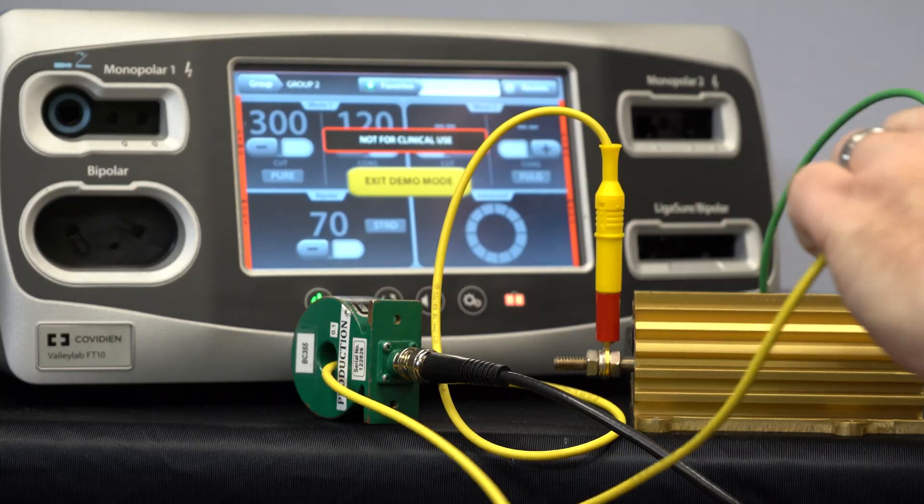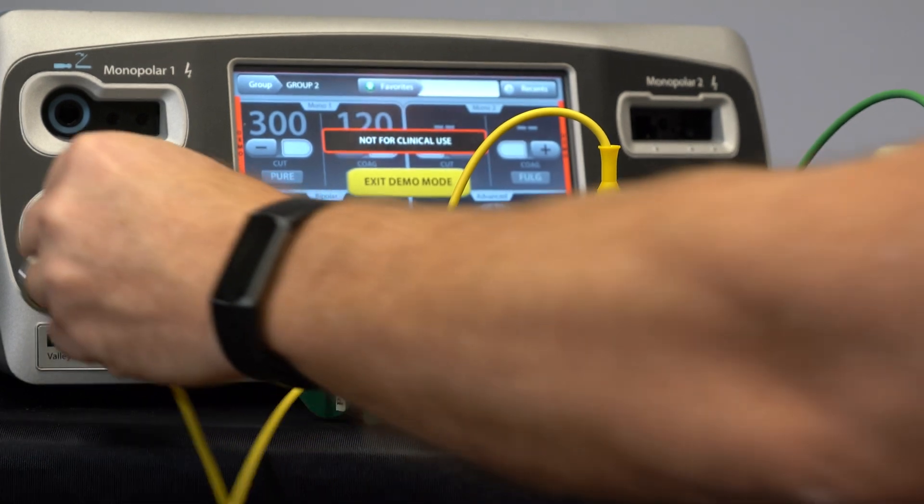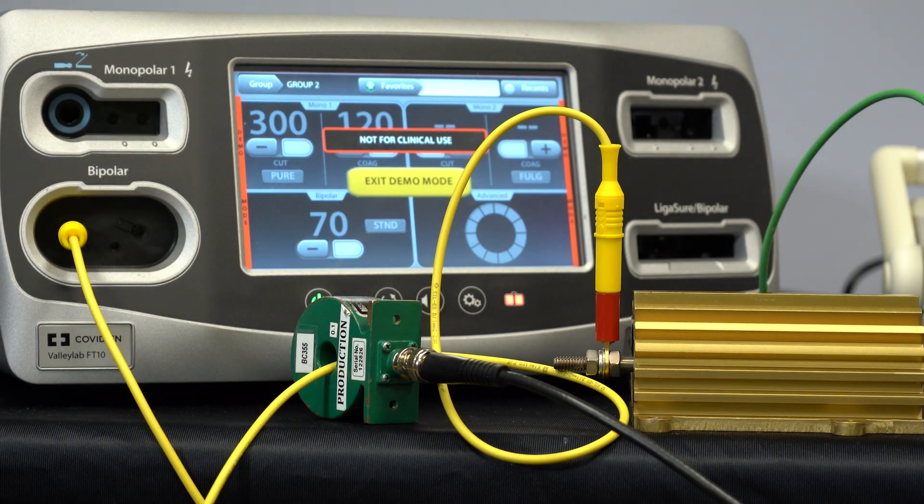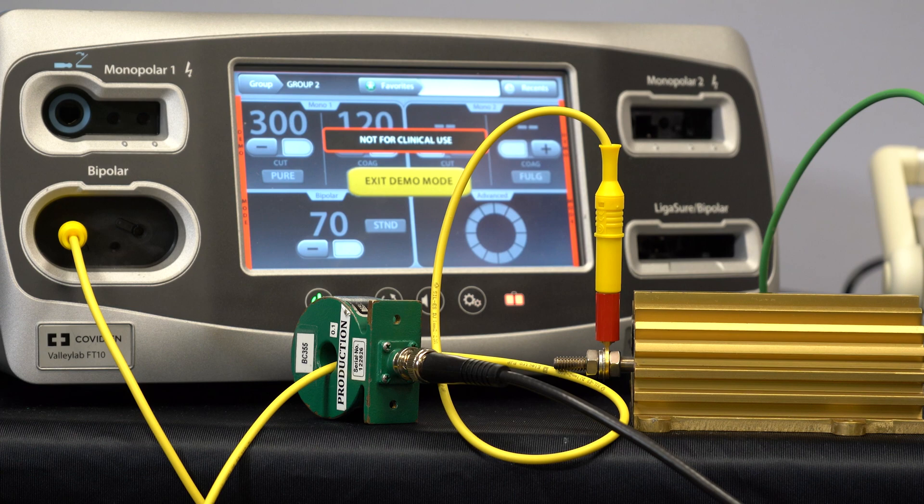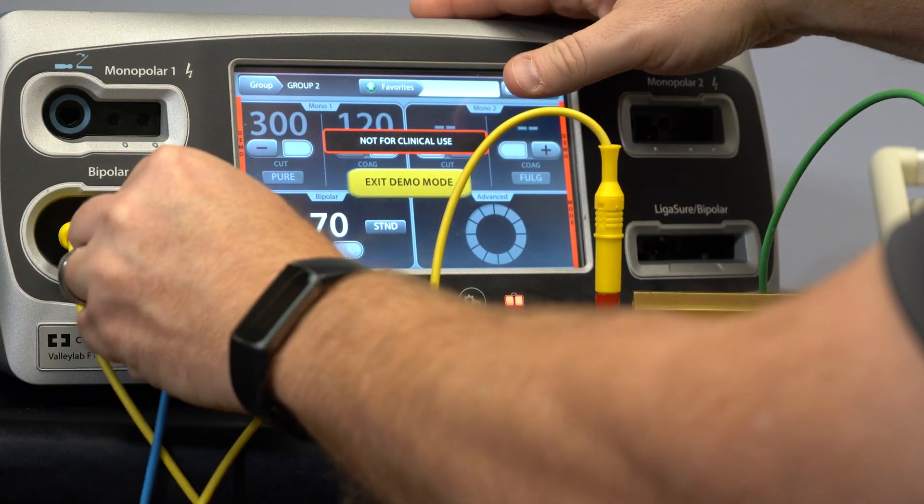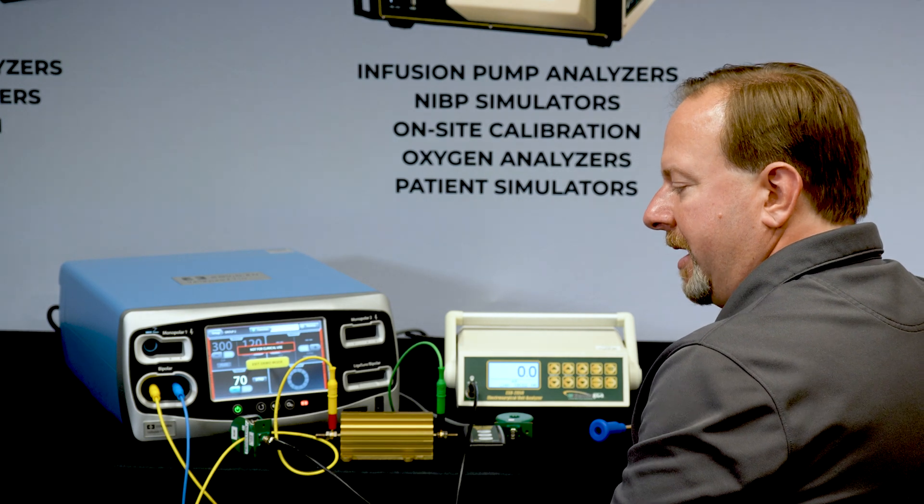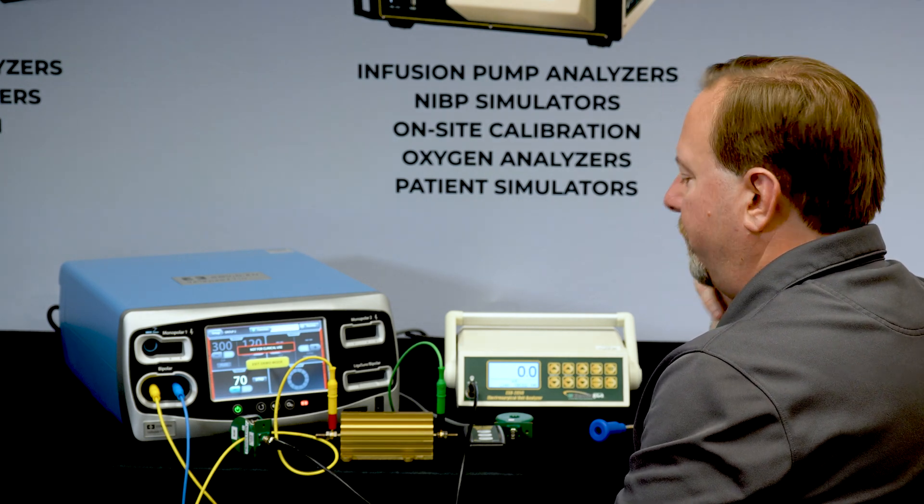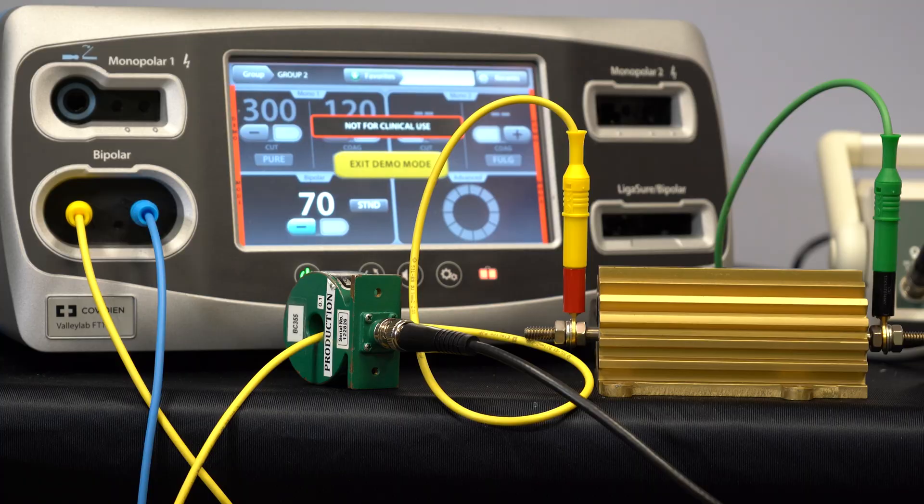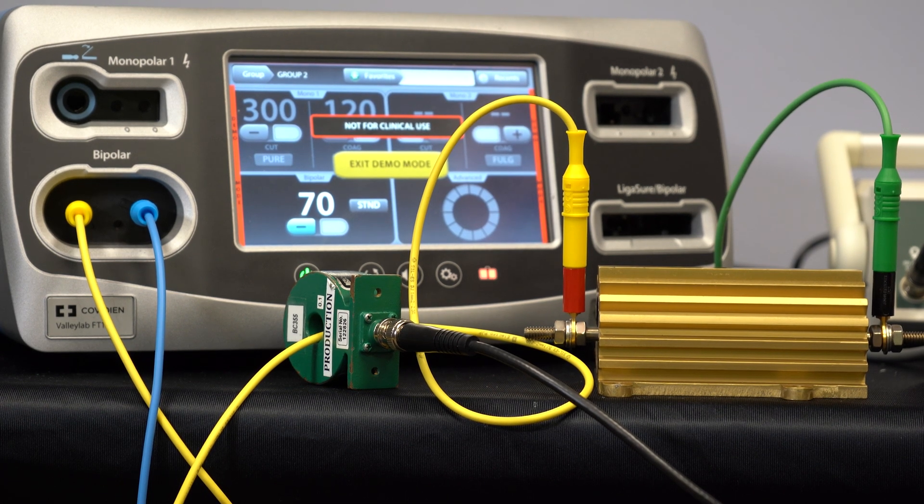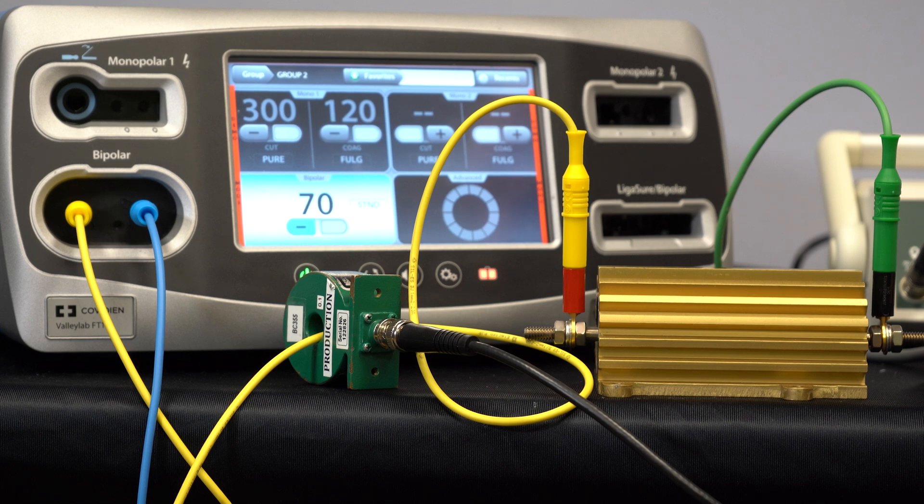We could also test the bipolar. So when we're testing bipolar we have to have both pins of the generator active. There's actually a little micro switch in there that detects whether or not there's a cable plugged in. So if we're going to trigger this with the foot switch port we have to have both of those micro switches depressed.